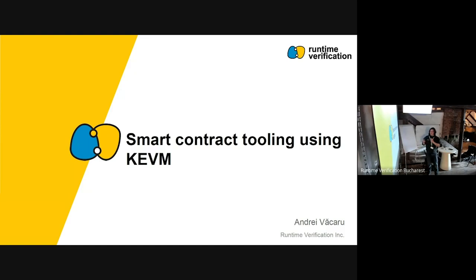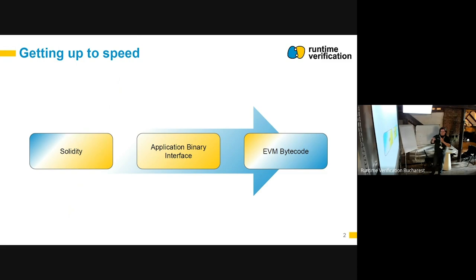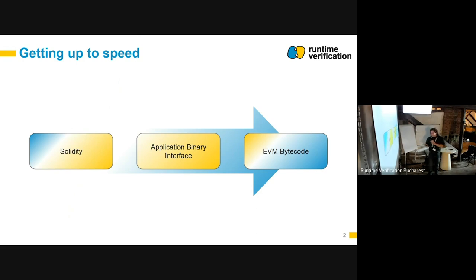First, I'm going to talk about the process of writing a smart contract. One of the most used high-level languages in which developers develop smart contracts is Solidity. Using the Solidity compiler, we generate the application binary interface — the ABI — and then the EVM bytecode, which is the low-level code executed by every node in the blockchain and stored on the blockchain.